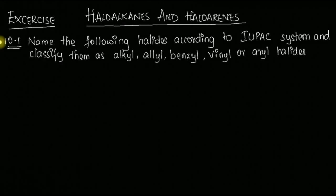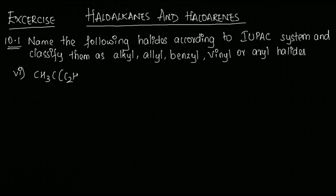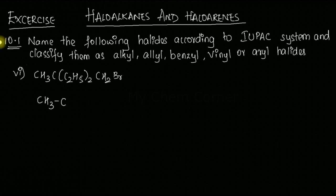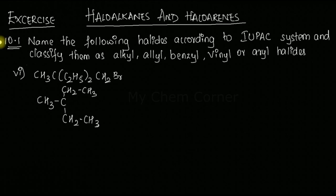This is a continuation video of the previous one, covering the next five compounds in naming. Question six: the compound is CH₃C(C₂H₅)₂CH₂Br. Drawing it out, we have CH₃-C with two C₂H₅ groups in brackets — one ethyl group on top and one below — then continuing the chain with CH₂Br.